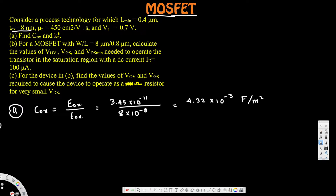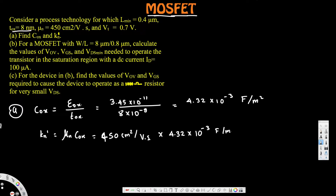So 4.32 × 10⁻³ F/m² is the oxide capacitance — part (a) is done for C_ox. Now we have to calculate k_n prime, the transconductance parameter, using the formula k_n prime = μn × C_ox. μn is provided as 450 cm²/V·s, and C_ox is 4.32 × 10⁻³ F/m², so we just multiply these two.